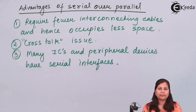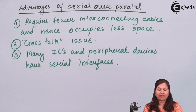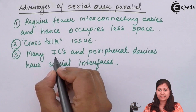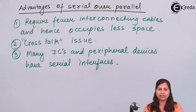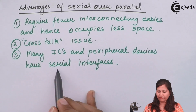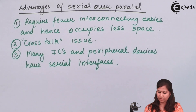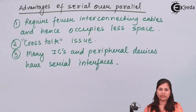Computers and microprocessors have to interface with peripheral devices and ICs, and these components are equipped with serial ports. Since no parallel ports are available on many devices, they have serial interfaces. That is why computers and microprocessors use serial transmission of data, and parallel data has to be converted into serial data before transmission.